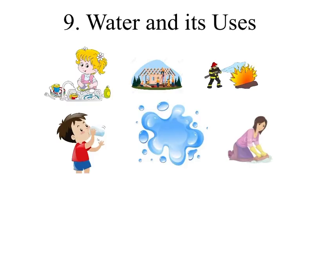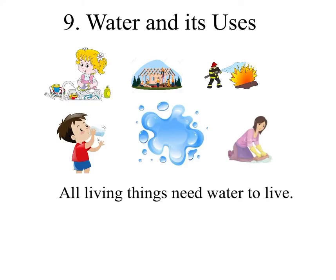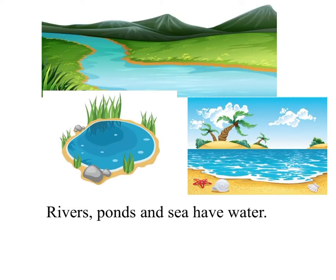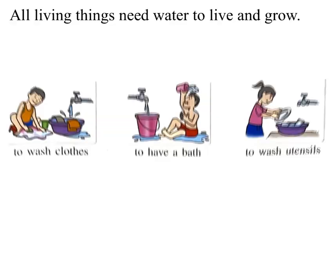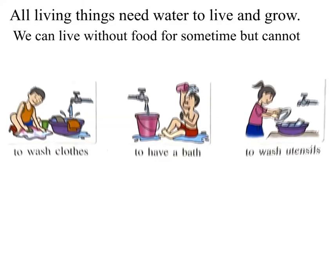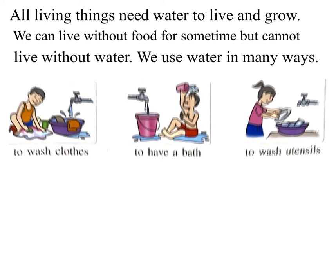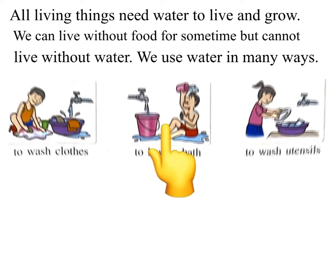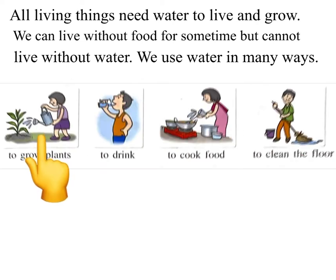Chapter 9: Water and its uses. All living things need water to live. Rivers, ponds, and the sea have water. All living things need water to live and grow. We can live without food for some time, but we cannot live without water. We use water in many ways: to wash clothes, to have a bath, to wash utensils, and to grow plants.